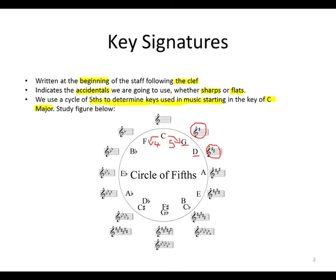Every time we go anti-clockwise, we will add a flat. For instance, from C, let's count 4 — C, D, E, F. We get to F, and we add a flat. Then from F, we have to count 4 again: F, G, A, B. We're going to get B flat. Why are we getting B flat instead of B? It is because we already have the accidental of B flat. So B flat will have two flats, and so on and so forth until we get to the other side.